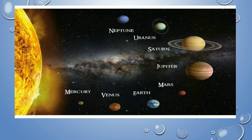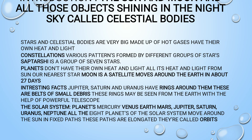So what is the solar system? 'Sol' means the Roman god of the sun. The entire solar system's central part is the Sun, which is surrounded by eight planets. We will discuss each one step by step. In the solar system, celestial bodies are present. The Sun, Moon, and all those objects shining in the night sky are called celestial bodies. Stars and celestial bodies are very big.